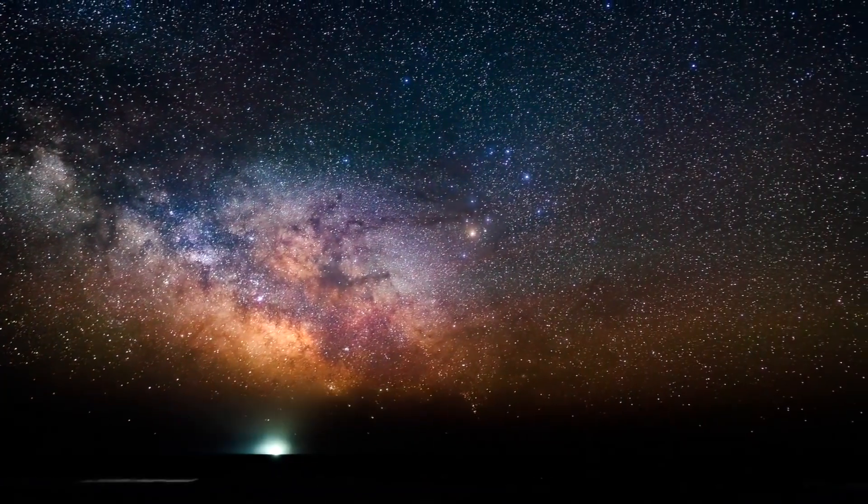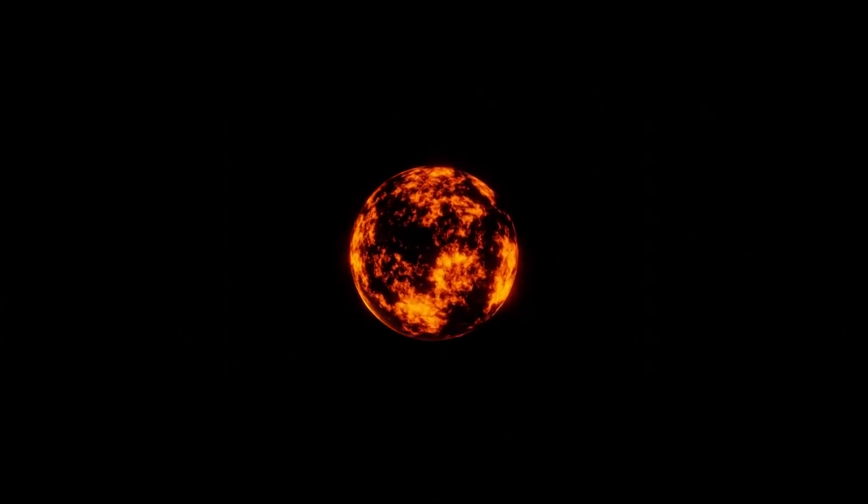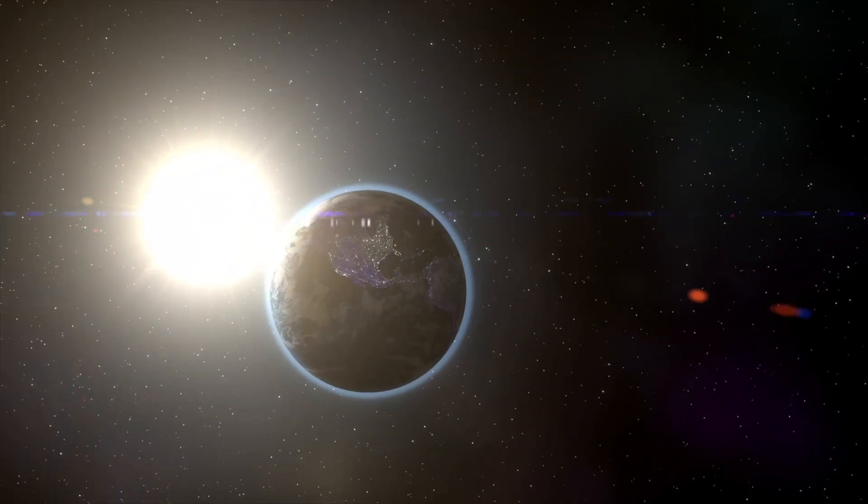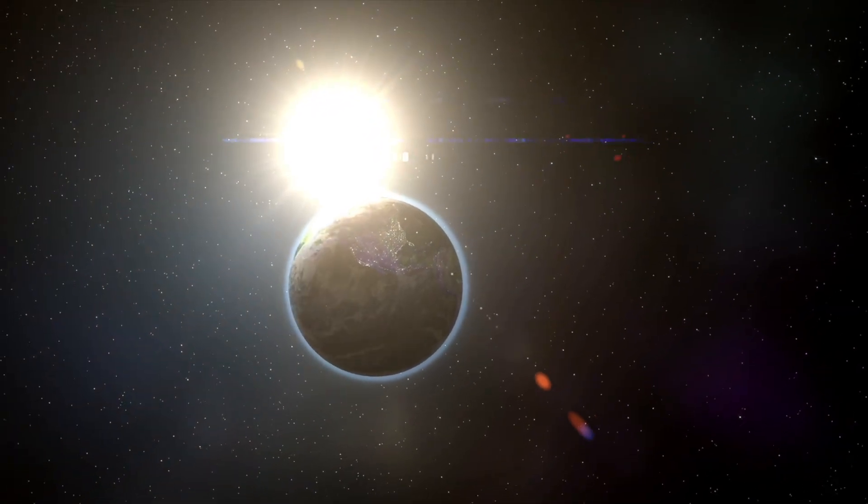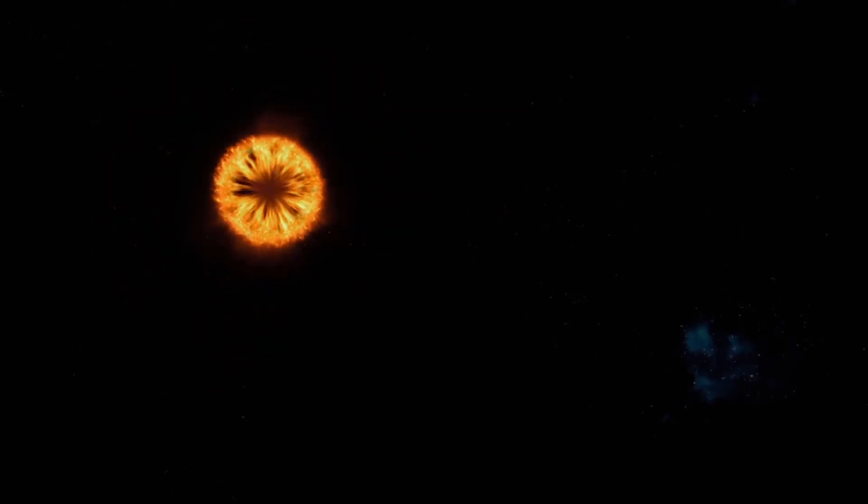When stars contain at least eight times the mass of our Sun, they can explode in a supernova event to form a super-dense object. If the star is massive enough, at least 25 times the mass of our Sun, a supernova will lead to the star's core forming a black hole.